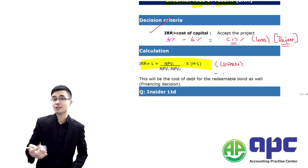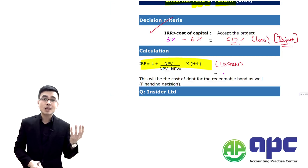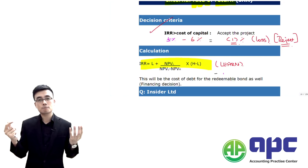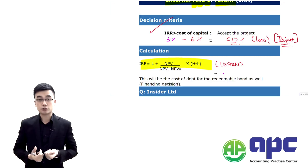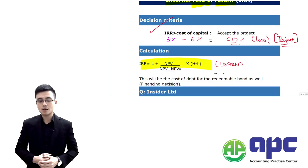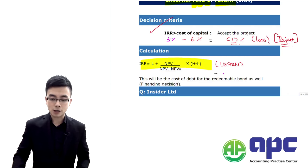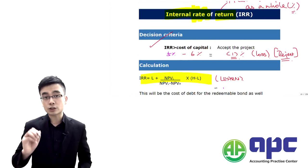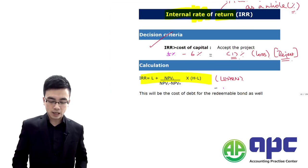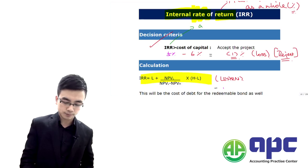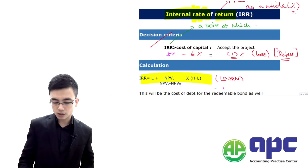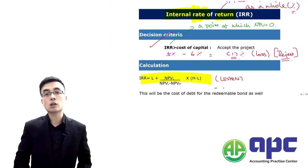That's the decision criteria: you simply compare the IRR with the cost of capital. If the IRR is greater than the cost of capital, accept the project; if not, simply reject it. The IRR is the return from this project without considering the cost of capital, and the IRR is the point at which the NPV equals zero.